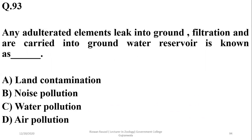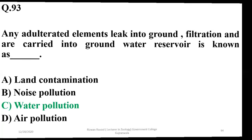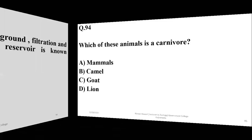Question 92: Adulterated elements leak into the ground through filtration and are carried into groundwater. If you are going to a water reservoir, this is classified as water pollution — option C.